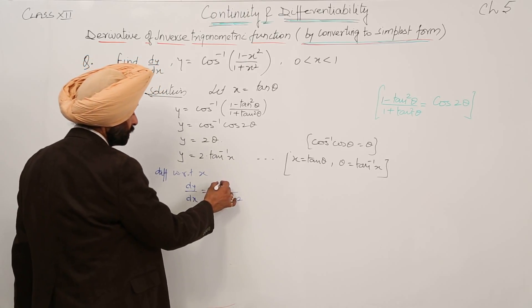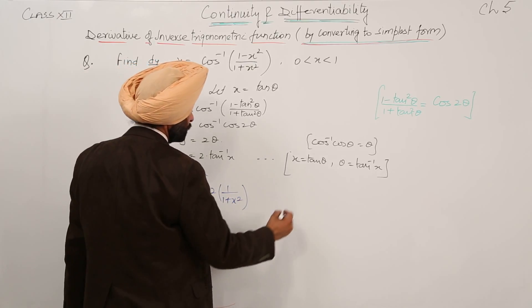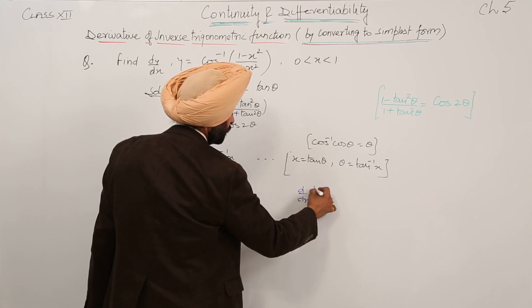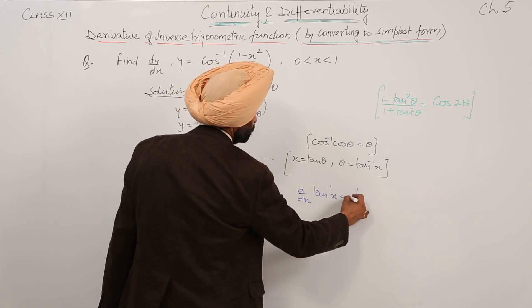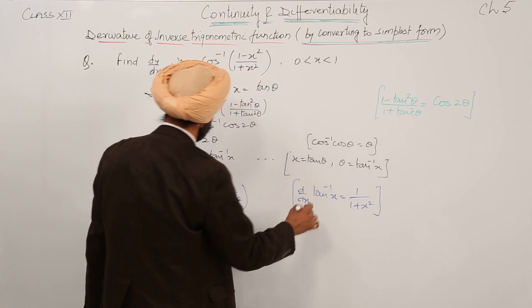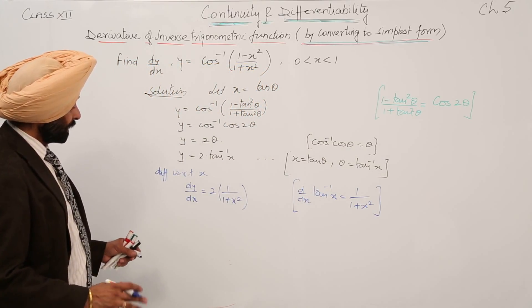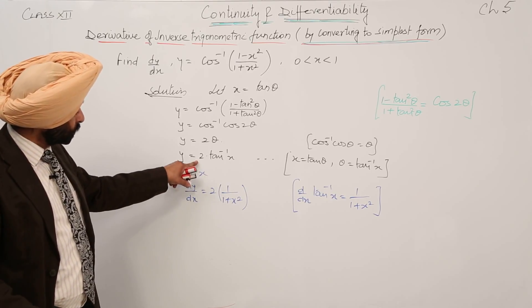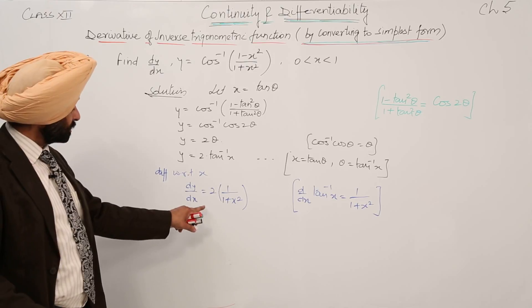Now, what it was? Derivative of tan inverse x. dy by dx of tan inverse x is equal to 1 upon (1 plus x square). So, directly I have applied this one. dy by dx is equal to 2 and derivative of tan inverse x.